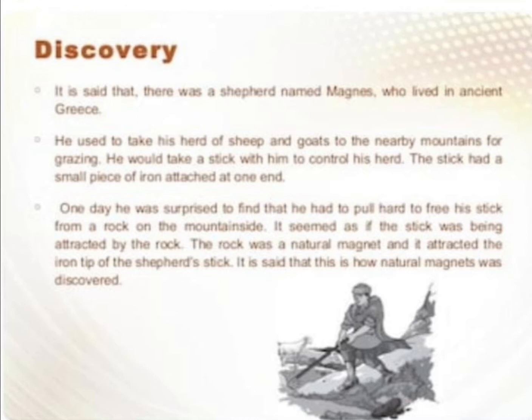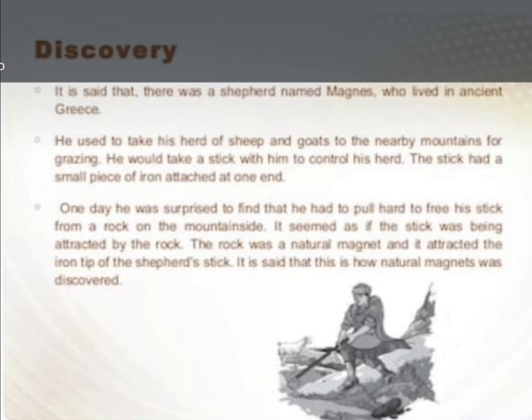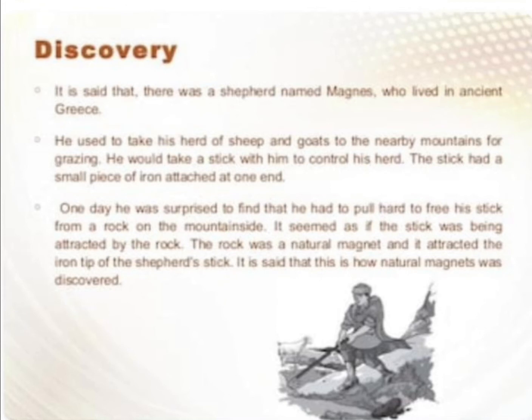वो अपनी sheep और goats को लेके mountains पे गया और फिर उसने वहाँ stick ली उनको control करने के लिए — उस stick के ऊपर छोटा सा iron का piece attach कर रखा था। एक दिन उसकी stick एक rock से suddenly टकराई और वहीं पे attract हो गई, stick कर गई। Shepherd को थोड़ा जोर लगाना पड़ा उसको rock से हटाने के लिए। उसने observe किया कि इस rock के अंदर एक ऐसी property है जो iron के part को attract कर लेती है। इस तरह से magnets discover हुए।